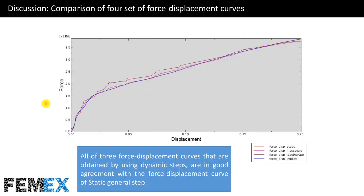In this picture, four sets of force-displacement curves are compared to each other. All three force-displacement curves obtained by using dynamic steps are in good agreement with the force-displacement curve of the static general step. At the end of the tutorial, all of the force-displacement curves are plotted and compared to each other.